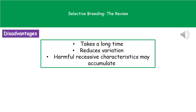There are some disadvantages to selective breeding. First, it takes a long time to go through this process of selecting and breeding over and over again. We will also reduce the variation in the population, since if we're only selecting certain characteristics we run the risk of losing other beneficial ones as well.